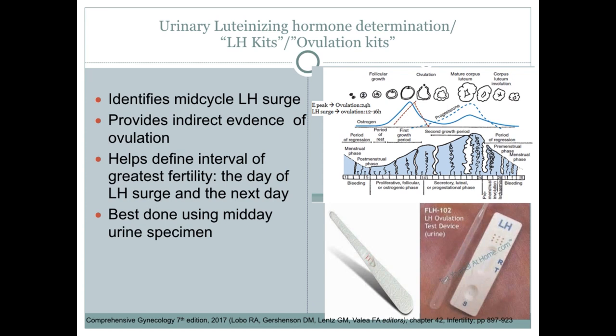Urinary luteinizing hormone determination — what we call LH kits or ovulation kits — identifies the mid-cycle LH surge and provides indirect evidence of ovulation. This helps define the interval of greatest fertility, which is the day of the LH surge and the next day. This is best done using a mid-day urine specimen, discarding the first urine output of the morning.